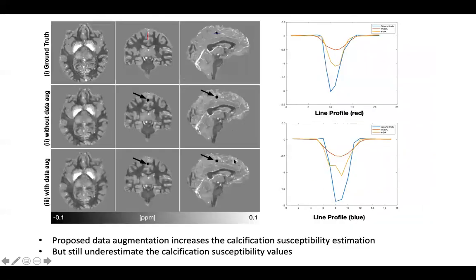Here we compared with applying data augmentation and not applying data augmentation. In the line profile, the blue curve is the ground truth. The yellow curve applied the proposed data augmentation. The red curve didn't apply data augmentation. We found that the proposed data augmentation can increase the calcification susceptibility estimation, but still underestimates the calcification susceptibility values.